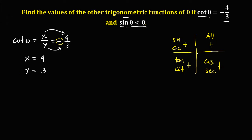Since sine is negative in quadrants 3 and 4, and cotangent is negative — cotangent is positive only in quadrant 3 — therefore theta is in quadrant 4. In quadrant 4, x is positive and y is negative, so y is negative 3.